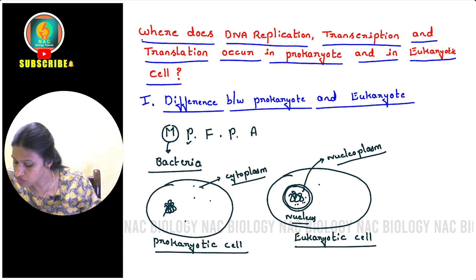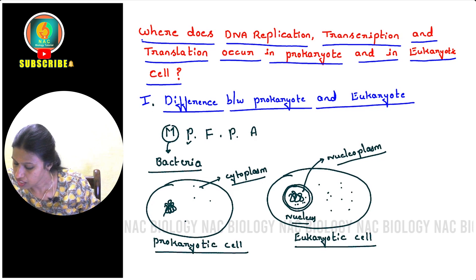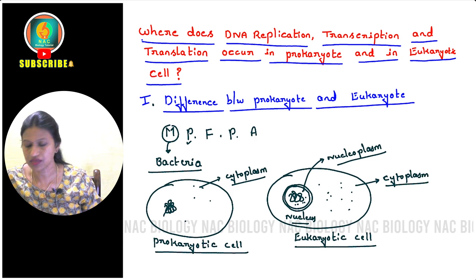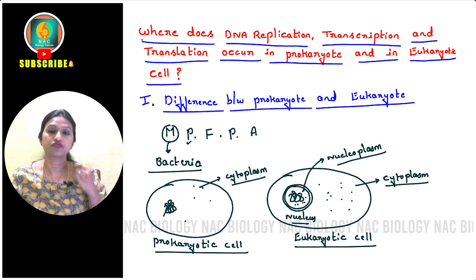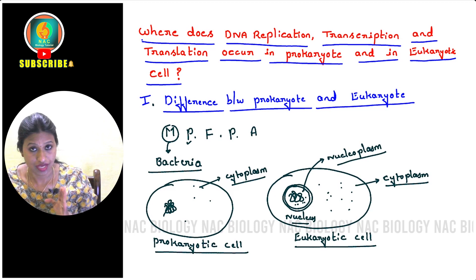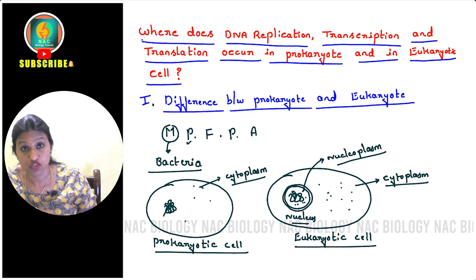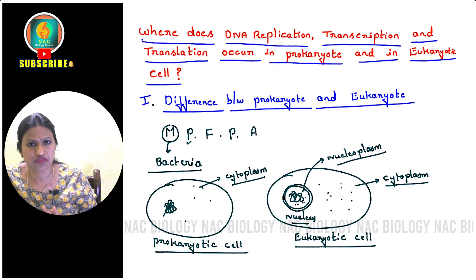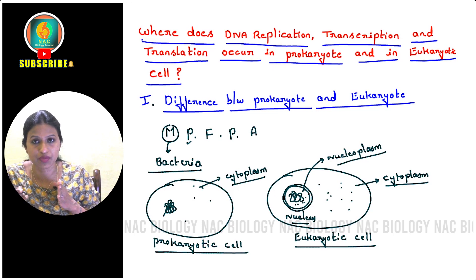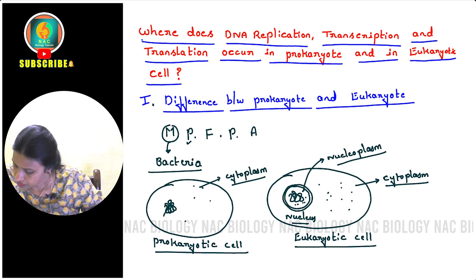Outside the nucleus, there is a separate space — the cytoplasm — within which there may be many other organelles like mitochondria and chloroplasts depending on the kind of cell. So what we understand is: membrane-bound organelles are present in eukaryotes, whereas membrane-bound organelles are absent in prokaryotes. In simple terms: eukaryotes have a definite nucleus, prokaryotes have no definite nucleus.